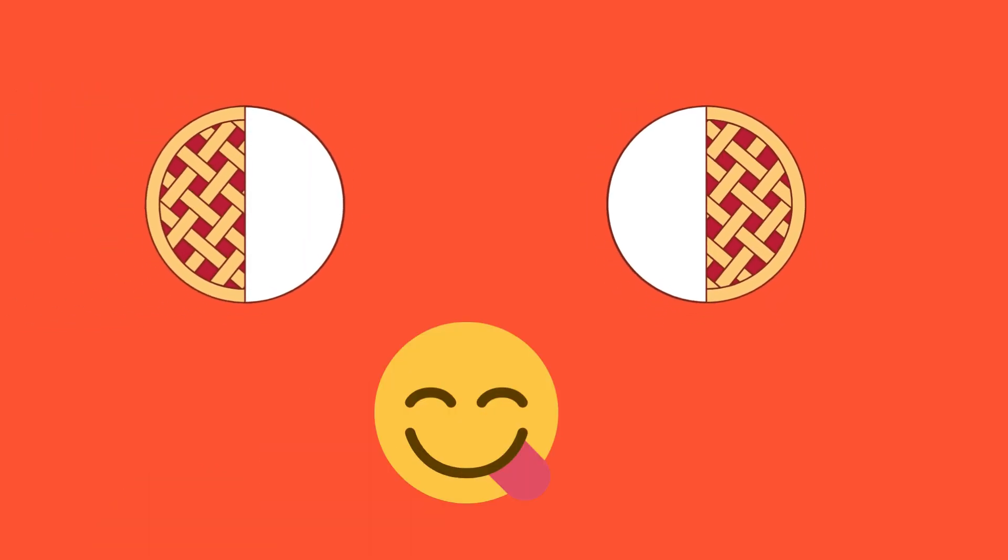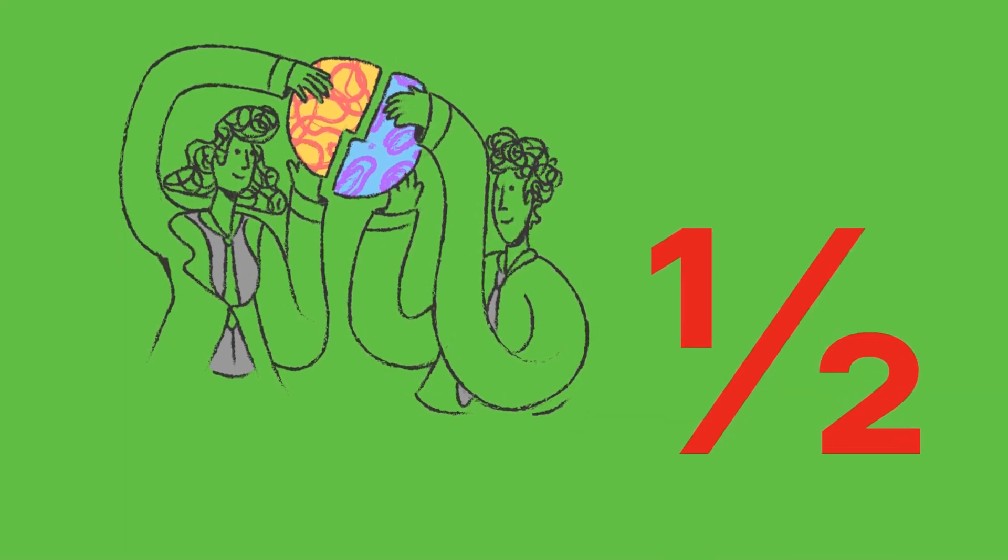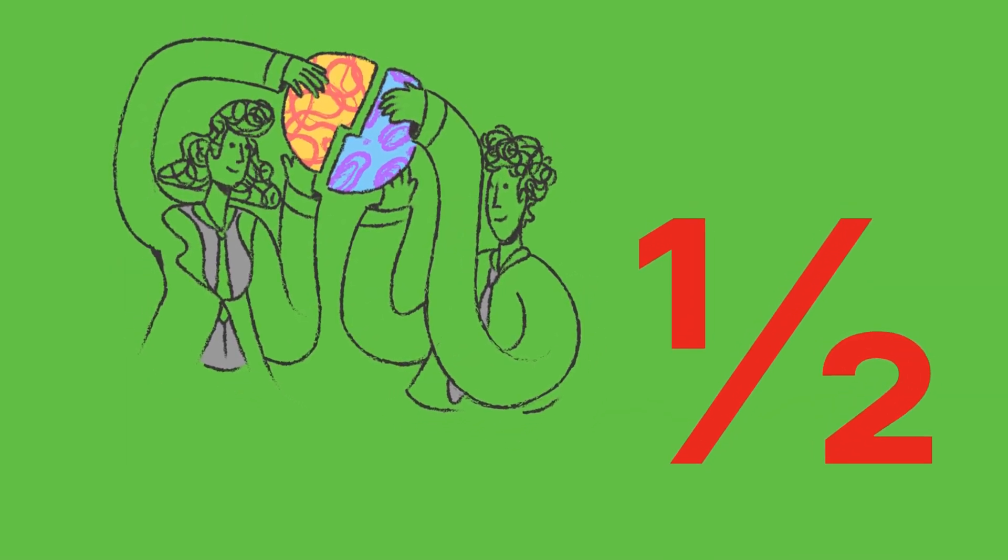If a pie is sliced in two, one for me and one for you, each is called a half, that's fair! And each a perfect pair!